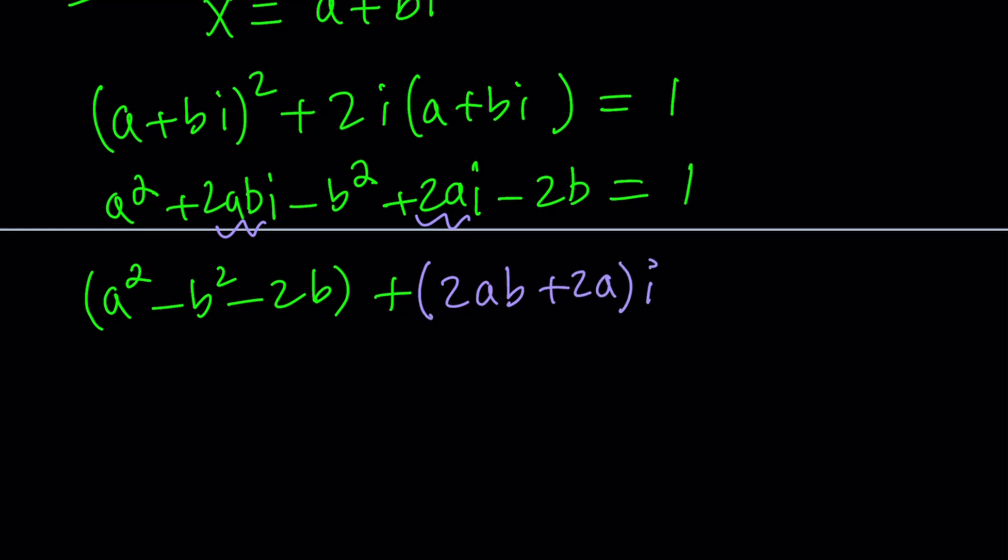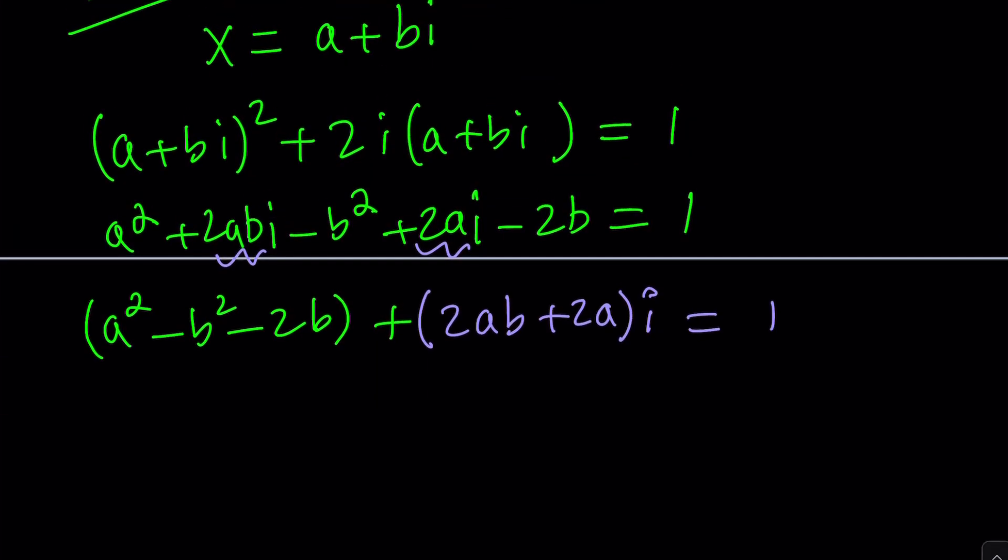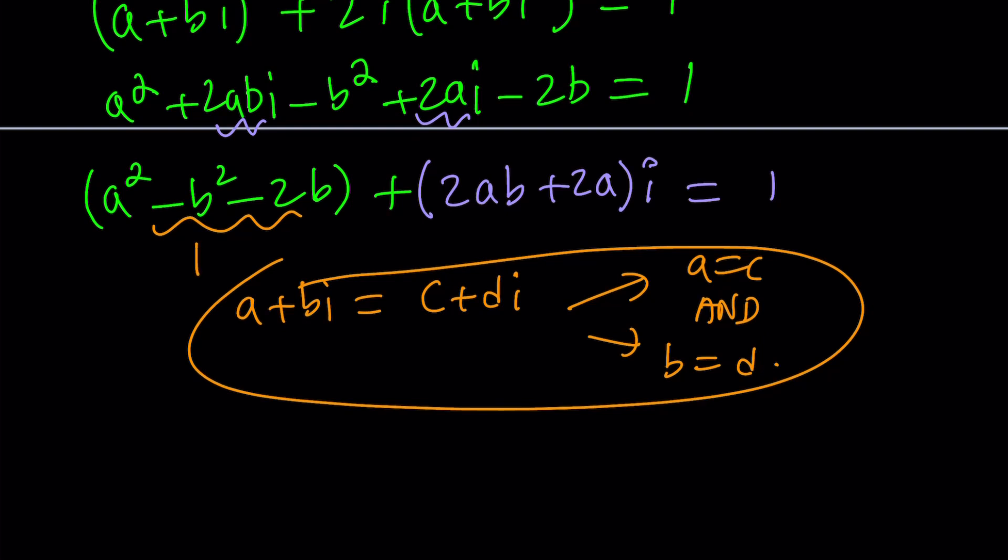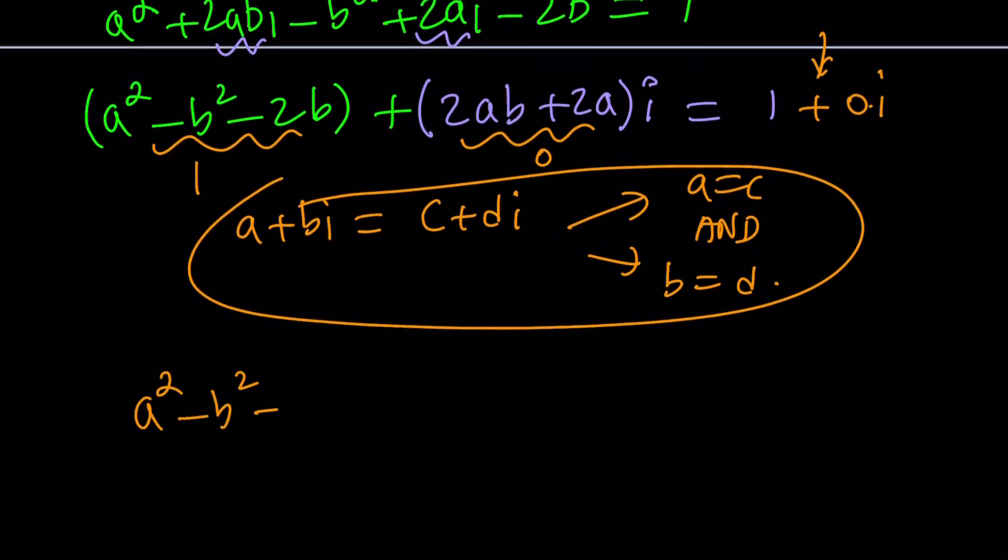That's the imaginary part and then that's equal to 1. Now notice that in order for these to be equal, the real parts must equal the real parts and the imaginary parts must equal the imaginary parts. In other words, if you have two complex numbers like a plus bi equals c plus di, this implies two things: a equals c and b equals d. This is kind of like an and. Both of them have to be satisfied. Otherwise, you can't have two equal complex numbers. So that means the real part must be 1 and the imaginary part must be 0 because there's no imaginary part on the right hand side as you can see. You can also write this as 1 plus 0i which will probably make more sense. So now we've got a system of equations. a squared minus b squared minus 2b equals 1 and 2ab plus 2a is equal to 0.